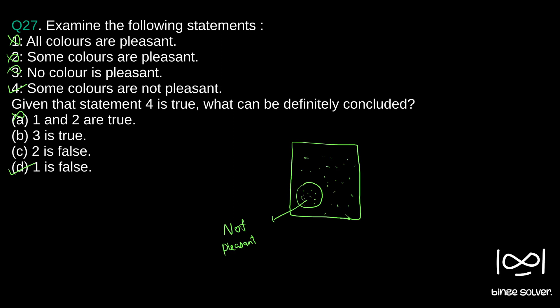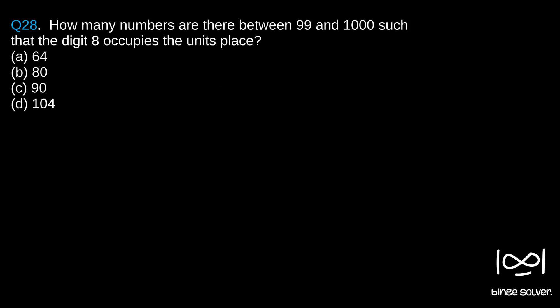Next question, question 28. How many numbers are there between 99 and 1000 such that the digit 8 occupies the unit's place?